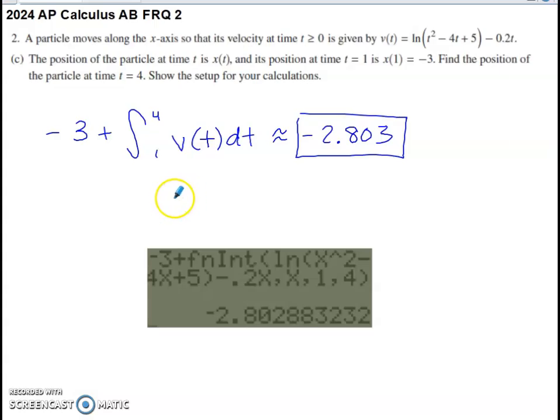So I know the position at time 1 is negative 3. I want to know the position at time 4. To find this, I'm going to take the position that I know at time 1, and I'm going to add on how much the position changes by from the time that I know it to the time that I want it by integrating that rate of change of position. So I'm integrating the rate of change of position to find the total change in position from time 1 to time 4. The rate of change of position is velocity.